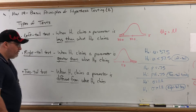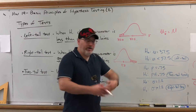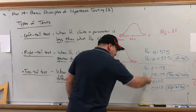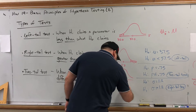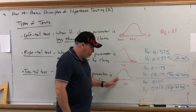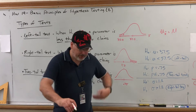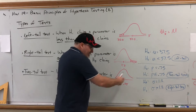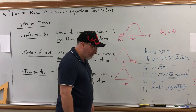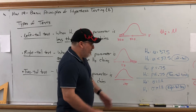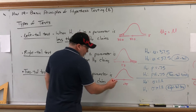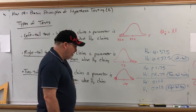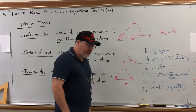For a two tail test, when the alternative claims the parameter is different, we don't care which side it's on. Taking the proportion example with 0.75 in the middle: if we pick a sample and its sample proportion is different from 0.75, that's expected — it can differ a little in either direction. But it can't be too far away in either direction, because the further out you go, the smaller those areas under the curve get.